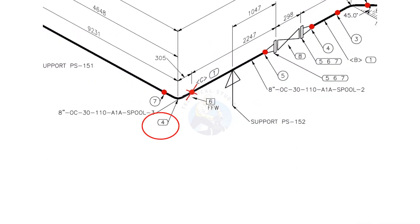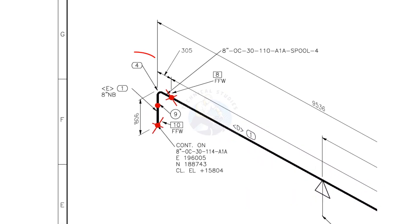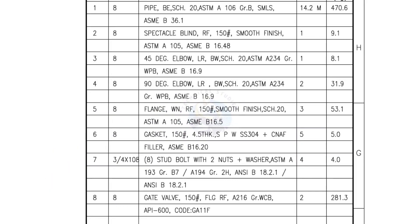Item number 4 — look for what is on the other end. Both ends are the same item. Checking the material list: it is a 90-degree elbow, long radius, butt weld, schedule 20, and the size is 8 inch.